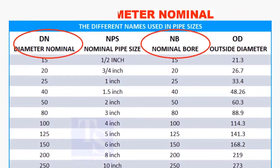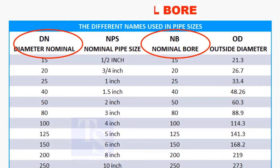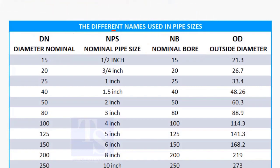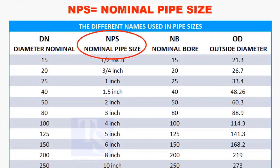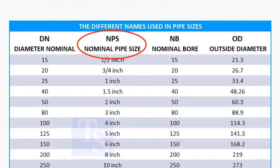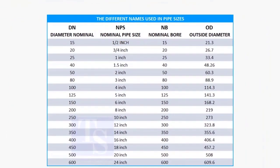DN and NB are the international and European metric methods used to describe NPS. The actual outer diameter, OD, is not the same as DN and NB. These are reference sizes only.